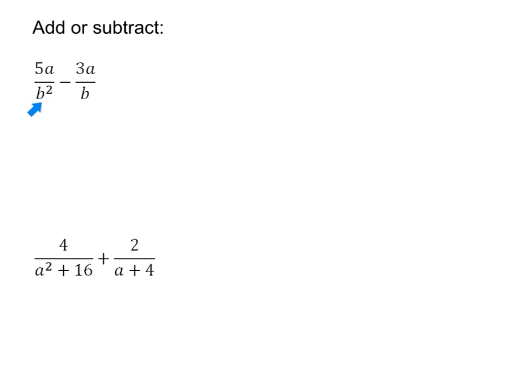We see this one has b squared and this one has b. So we're going to ask ourselves: what's the LCD — what is the least common denominator? We're going to want to multiply to get these to match up, and we can't multiply something by b squared to just make it b. So we need to take the bigger of the two — the LCD is going to be b squared.